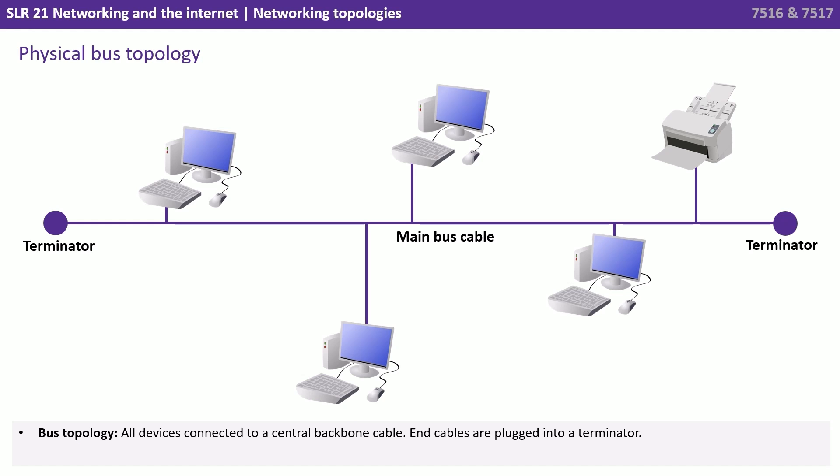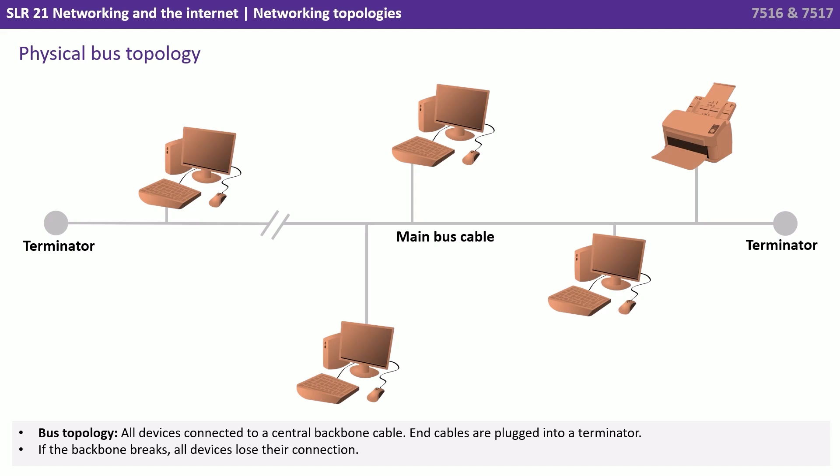Here we have an abstracted diagram that demonstrates what a physical bus topology looks like. With a bus topology, all devices are connected to a central backbone cable, and end cables are plugged into terminators. If the backbone cable breaks, all devices lose their connection.